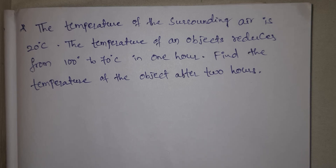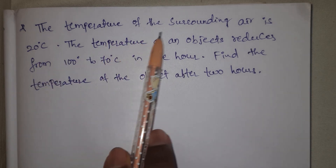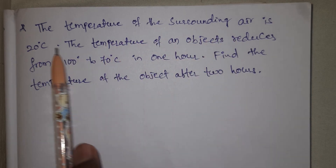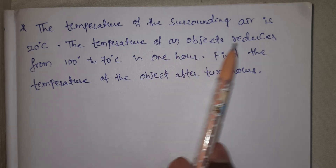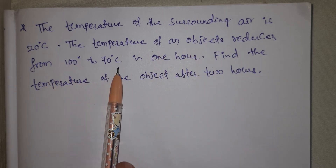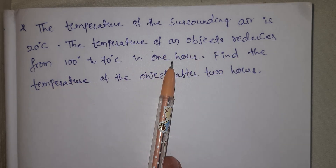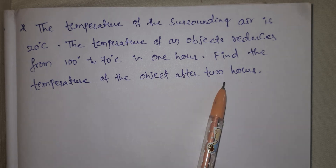Hi viewers, welcome to Rajesh Nekaloo. Today our topic is Newton's law of cooling problem. The temperature of the surrounding air is 20 degrees centigrade. The temperature of an object reduces from 100 to 70 degrees centigrade in 1 hour. Find the temperature of the object after 2 hours.